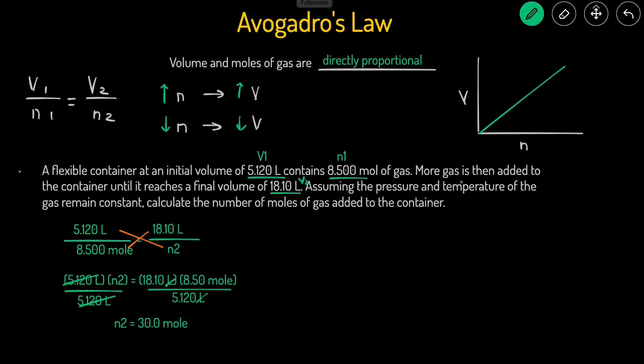To figure out the amount of moles that we need to add, we take the change in the number of moles, which is going to equal the final number of moles minus the initial number of moles. So the final is 30, and the initial, the one that we started with, N1, would be 8.5. And then that comes out to be 21.5 moles of gas that we need to add. And that's the final answer.